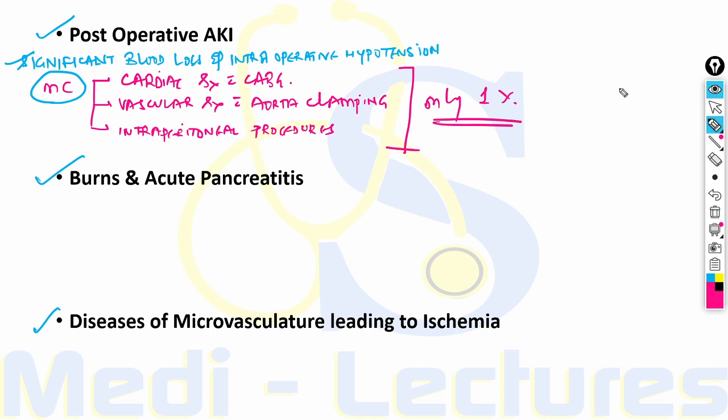Risk factors predisposing to post-operative AKI include CKD, old age, diabetes mellitus, congestive heart failure, and emergency procedures. Burns involving more than 10 percent of body surface area lead to AKI in 25 percent of cases.